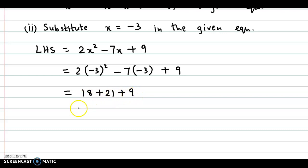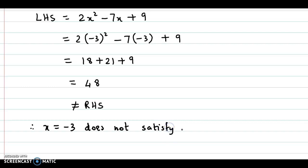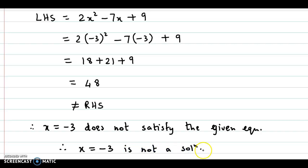21 plus 9 is 30, and 30 plus 18 gives us 48. But the right-hand side has been given as 0, so this is not equal to the right-hand side. Therefore, x equal to minus 3 does not satisfy the given equation, and x equal to minus 3 is not a solution of the given equation.